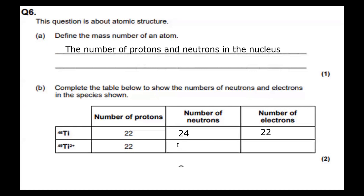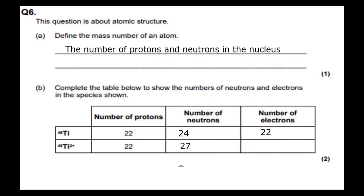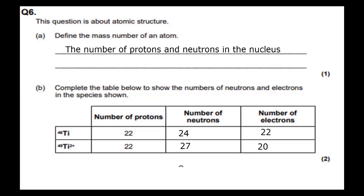In titanium-49, we've got 22 protons. 49 minus 22 gives 27 neutrons. This is an isotope, but it's also an ion — it's got a two-plus charge. So instead of 22 electrons, it's going to have 20 electrons, giving it an overall two-plus charge.